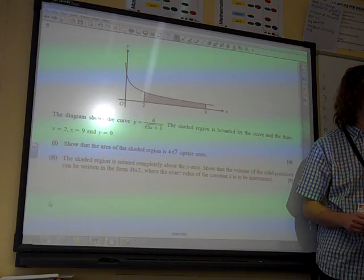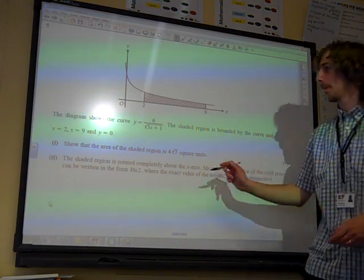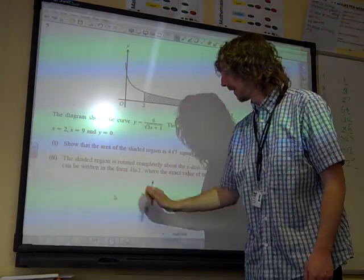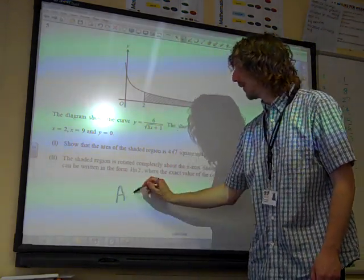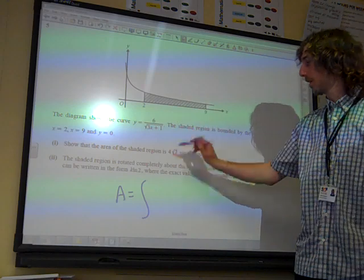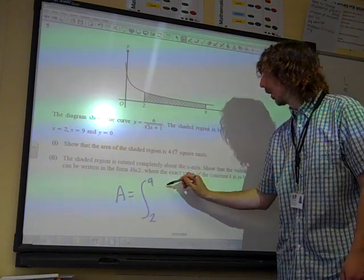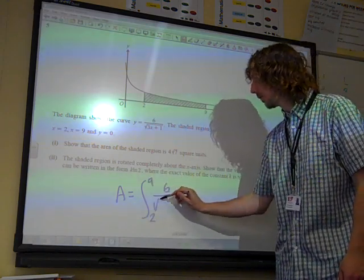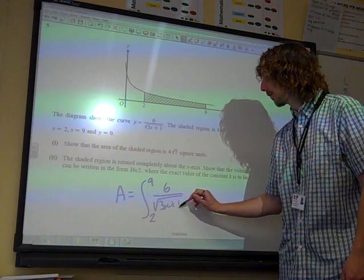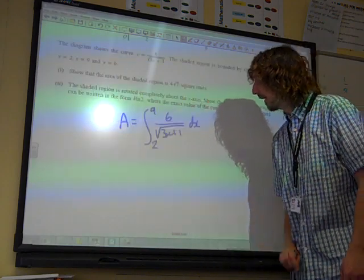Show that the area of the shaded region is 4 root 7 square units. Well, this is just the area. So that is the area would be the integral from 2 to 9 of 6 over root of 3x plus 1 dx.